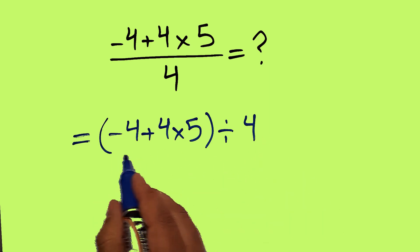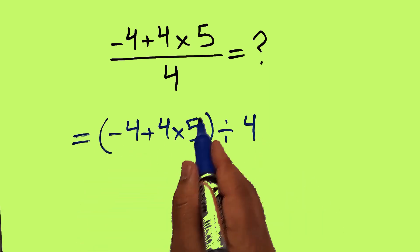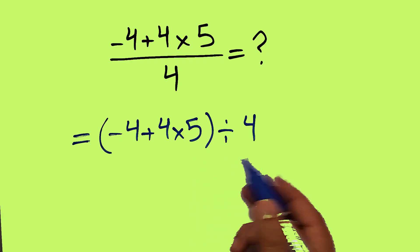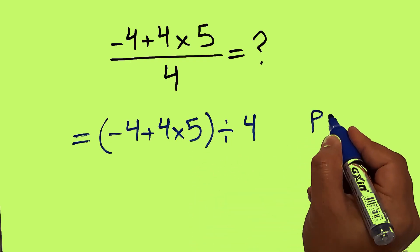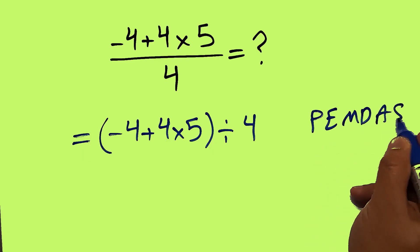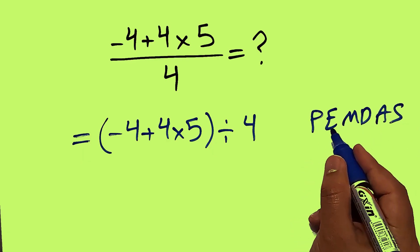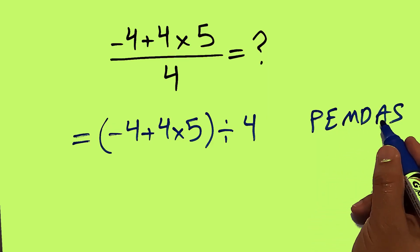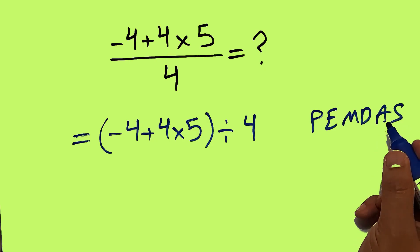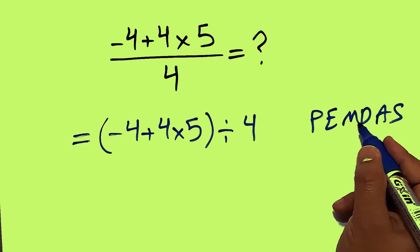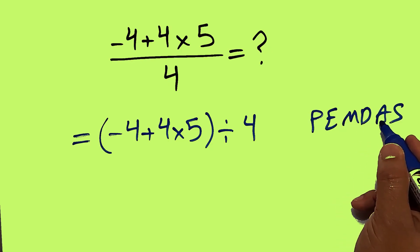Now here we have these parentheses and this division. According to the order of operations, which is PEMDAS: P stands for parentheses, E stands for exponents, M and D stands for multiplication and division, and A and S stands for addition and subtraction. First we do parentheses, then exponents, then multiplication and division, and finally addition and subtraction.